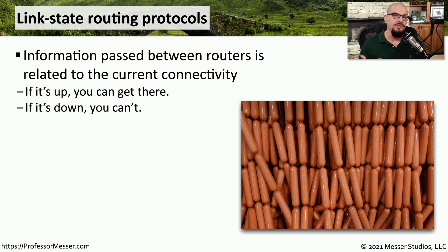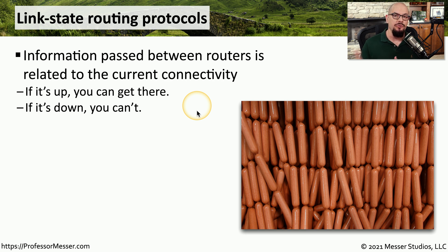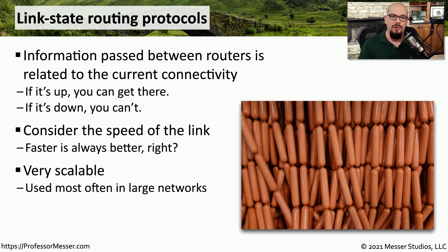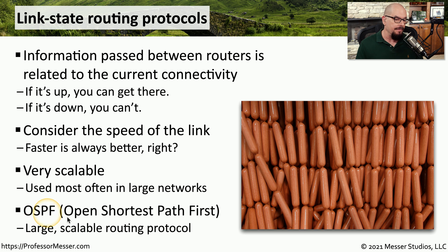In our previous example, you can see that there was a faster way to communicate between those two devices, but it required an extra hop. In order to take that speed into account, we can use a different type of routing protocol — a link state routing protocol. With a link state protocol, the status of the network determines whether traffic can flow across that connection. If the network is up and running and performing at high speeds, you can send traffic over that link; if the bandwidth is not available, we would not send traffic over that connection. Many link state routing protocols also consider the speed of the network links when calculating the metrics, which means you may take additional hops but ultimately transmit traffic over a much faster network. Link state routing protocols are generally very scalable and are often used on very large networks. One very common version is OSPF, or Open Shortest Path First, which is commonly used on some of the largest networks to provide dynamic routing.